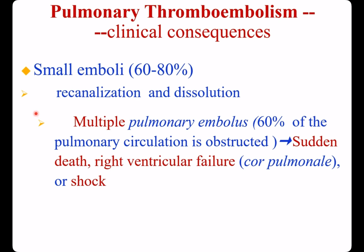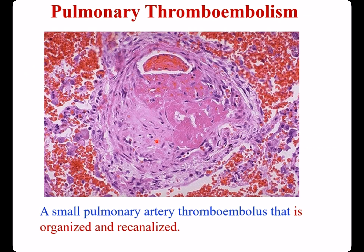Multiple pulmonary emboli: if 60% of pulmonary circulation is affected, it will lead to sudden death, right ventricular failure, or shock. This image shows a thrombus embolizing a small pulmonary artery. The thrombus undergoes organization and recanalization. If it occurs in only one area, nearly no obvious symptoms can be observed.